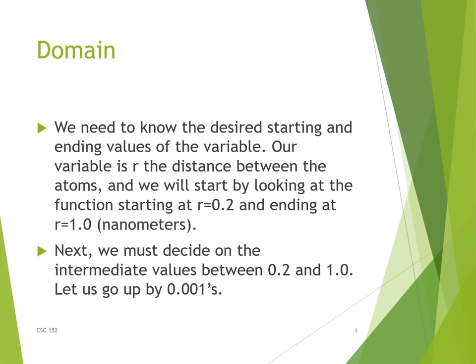The function has a variable R standing for the distance between the atoms, and we want to decide a domain — what R to start at and what R to finish at in our plot. We are going to choose R starting at 0.2 and R going up to 1, in nanometers. We also must decide how much to go up by with each step. We're going to take small steps of 0.001 to capture all the features of this function.